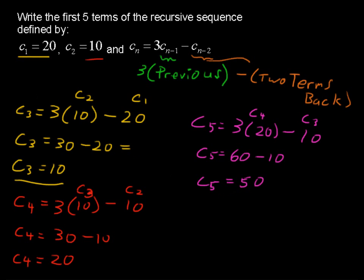It says the first 5. Let's just do one more. C sub 6. C sub 6 equals 3 times the previous, that's C sub 5, so 3 times 50 minus 2 terms back, so that's C sub 4, and C sub 4 was 20, so minus 20. So now we have C sub 6 equals 150 minus 20, so C sub 6 equals 130.